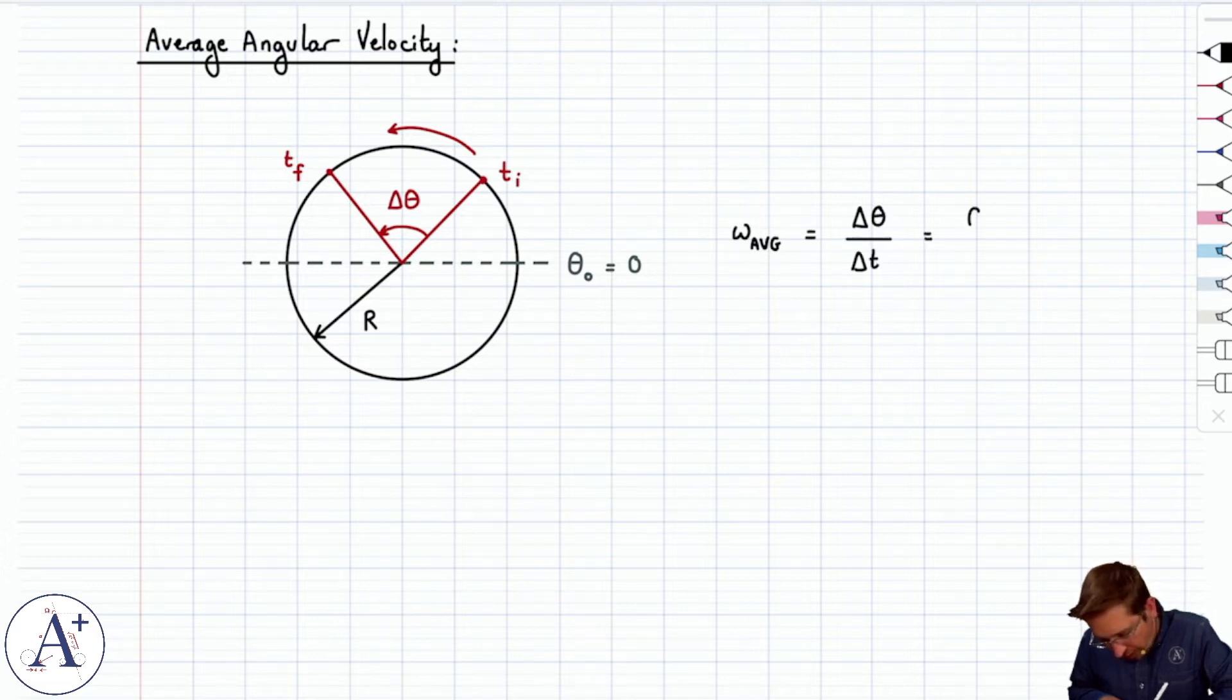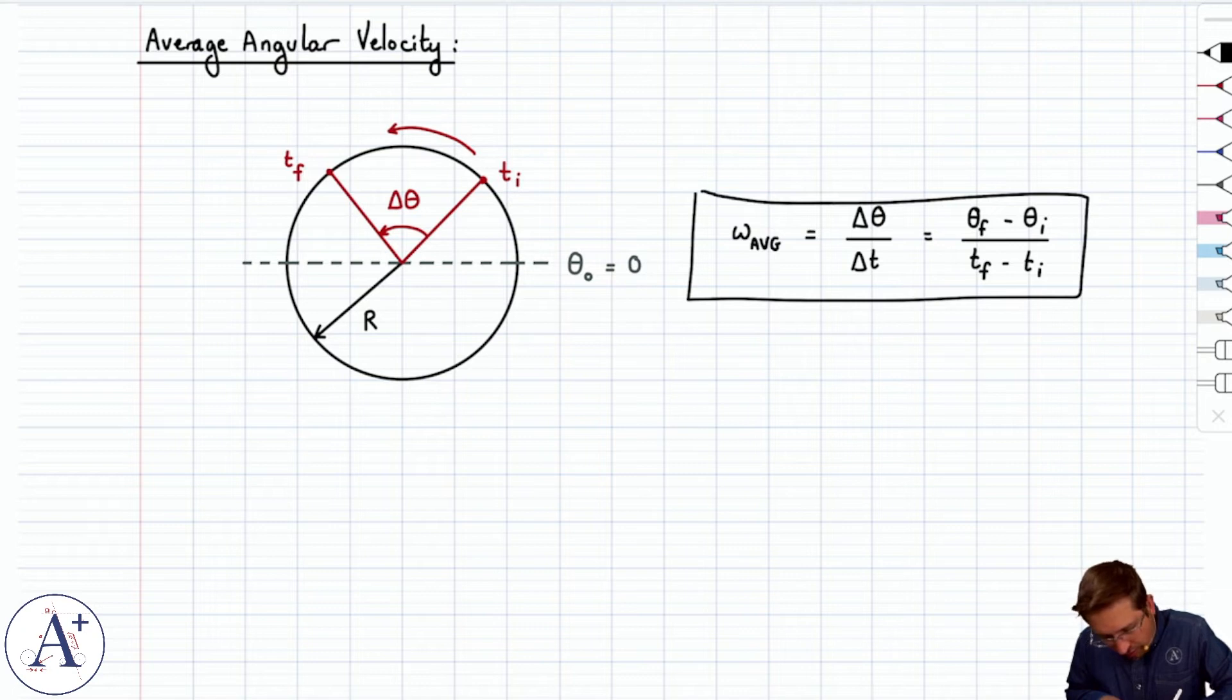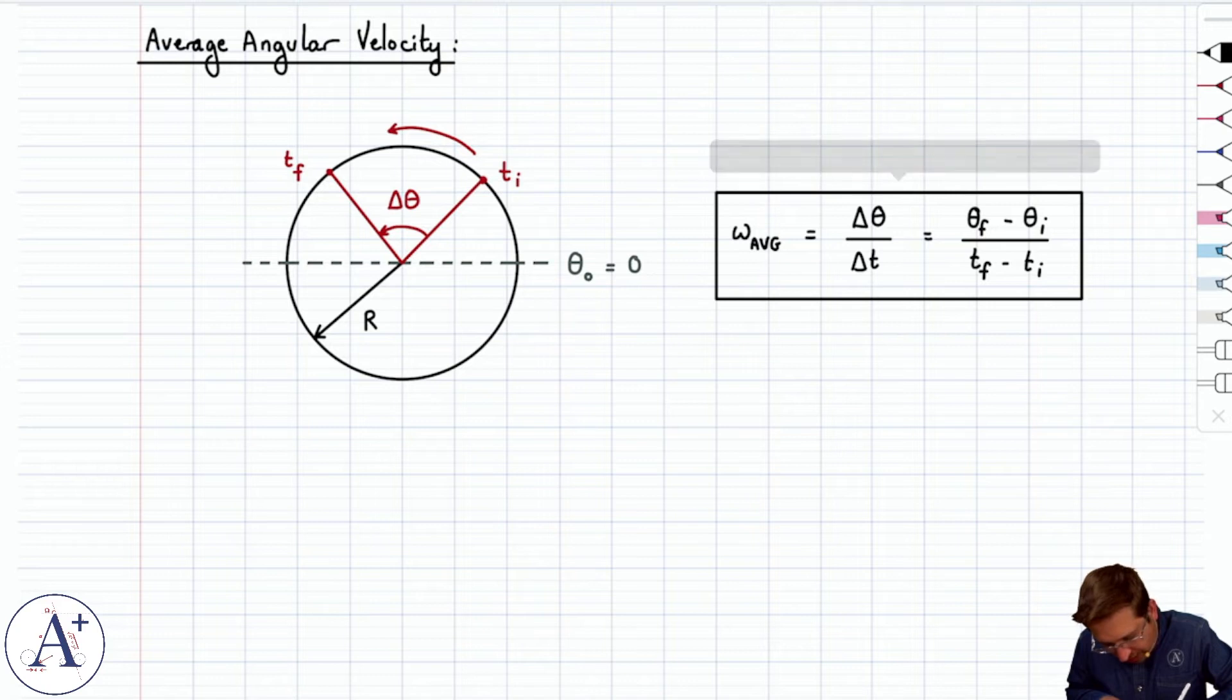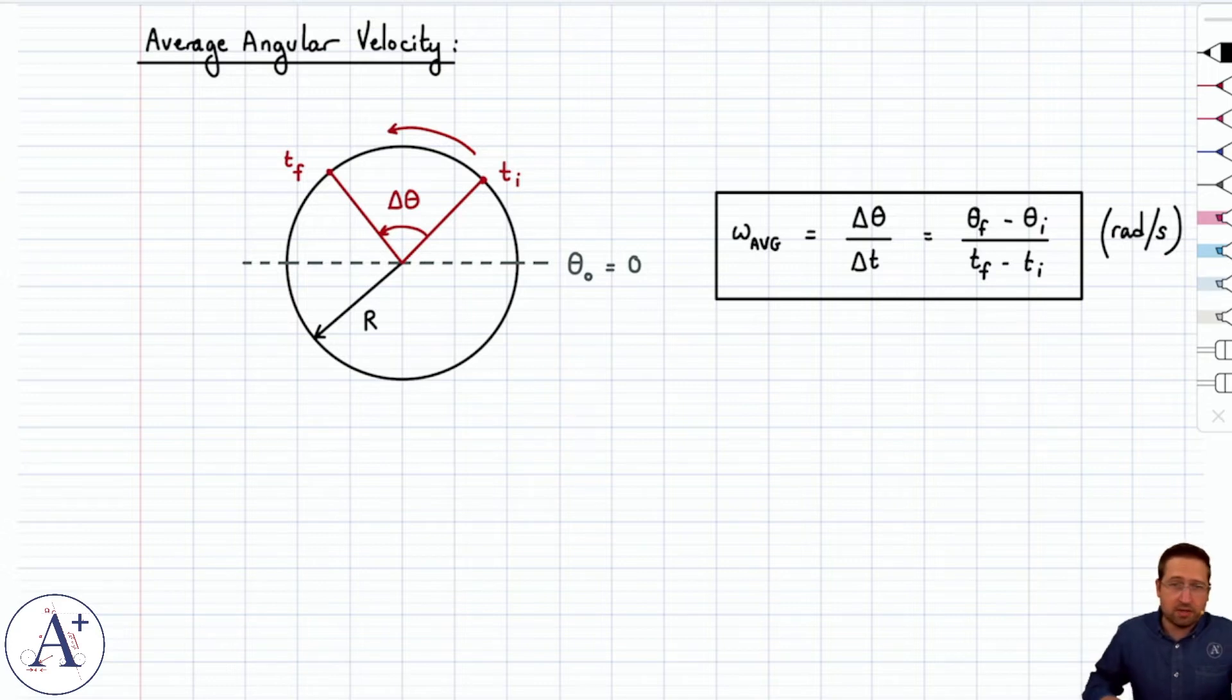Kind of shorthand, right? So it's really theta final minus theta initial. That's the definition of delta theta. And then delta t, of course, is t final minus t initial. So one way or the other, it's how many radians you cover in a given amount of time, and that on average tells you how many radians per second you cover. So the units are radians per second, naturally, because the angle theta is in radians, and time is measured in seconds.